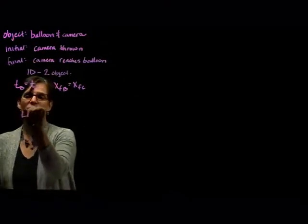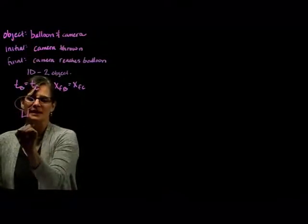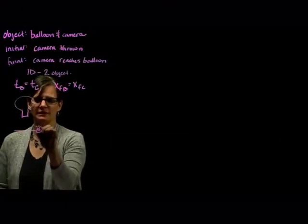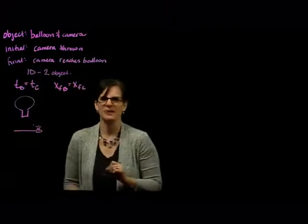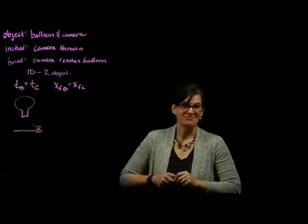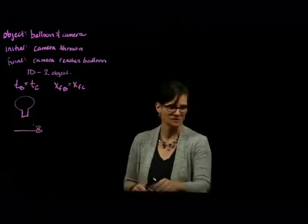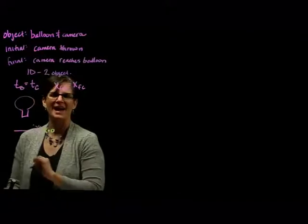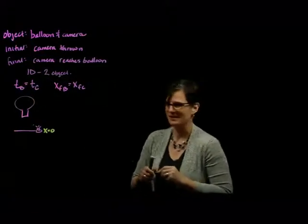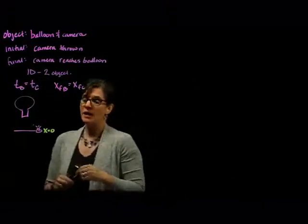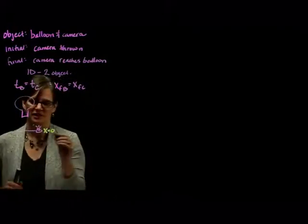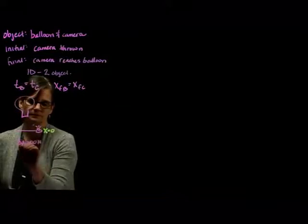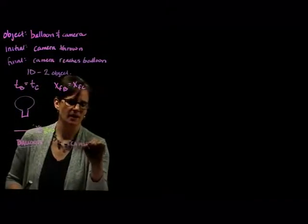We have to define the world. Here's our balloon and here's where the camera is going to start — that looks like a camera. We have to define the origin, so where should we set x equal to zero? I think it's helpful in this problem to set x equal to zero at the camera. We have two objects, so we have two lists that we have to generate: information about the balloon and information about the camera.